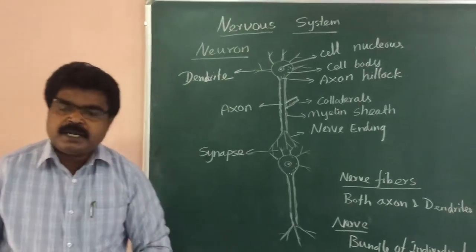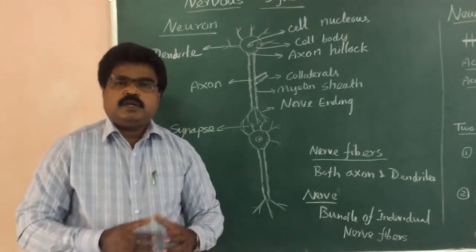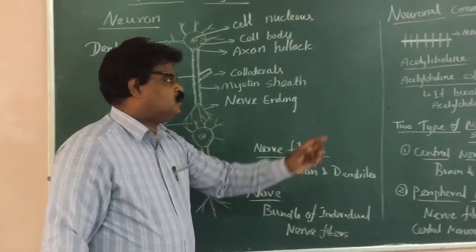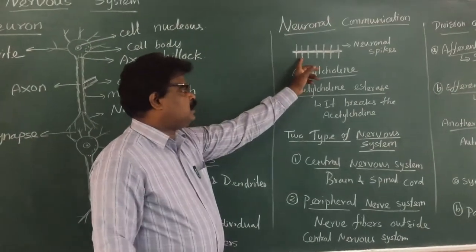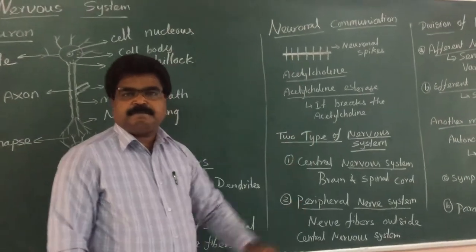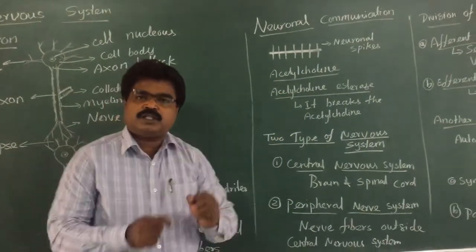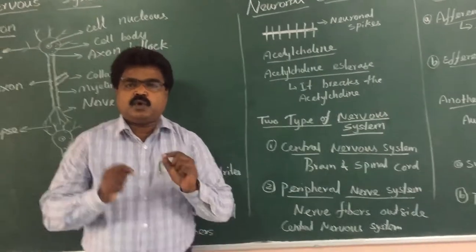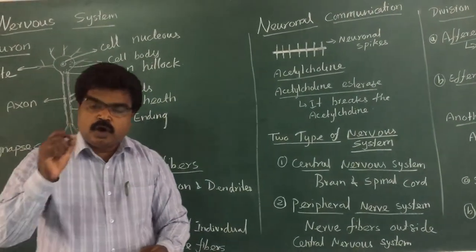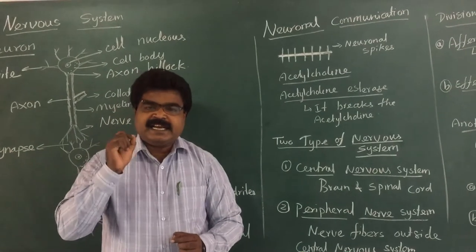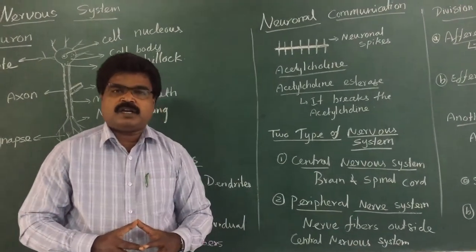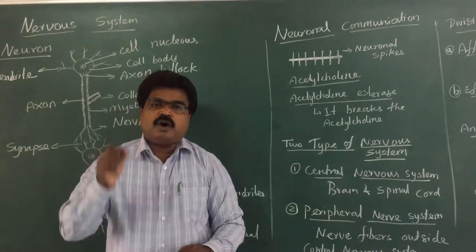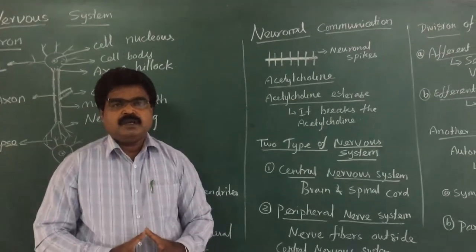How does neuronal communication take place? The neuronal communication is spike in nature, as seen in the diagram. This is called a neuronal spike — the action potential conduction in a neuron is a neuronal spike. It is also called saltatory conduction.